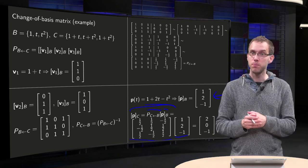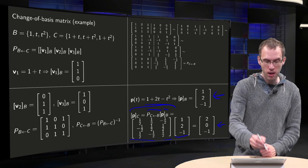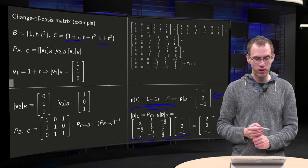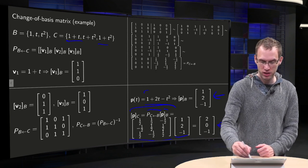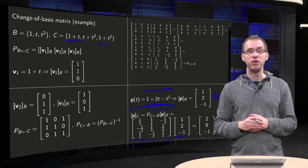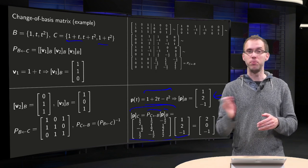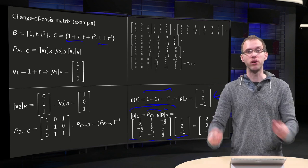If p in the basis C equals 2, 0, minus 1, so what would our p then be? 2 times 1 plus t minus 1 times 1 plus t squared. So 2 minus 1 equals 1 plus 2t minus t squared, which is indeed our p(t). So, yes, there we have our p in C. Now you see how you can use your matrix P from C to B or P from B to C to convert one coordinate vector into another coordinate vector.